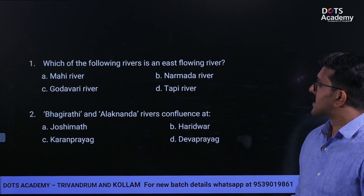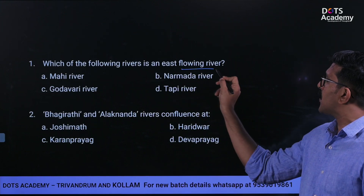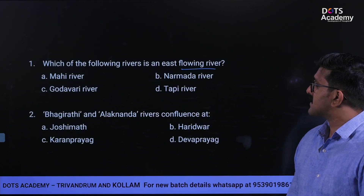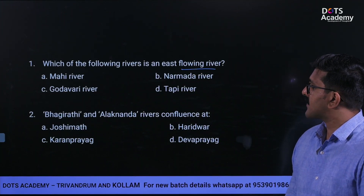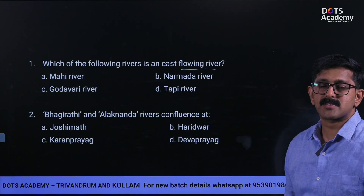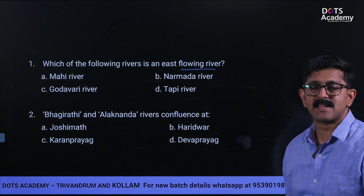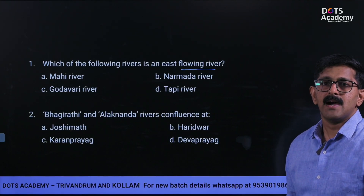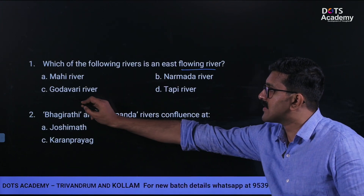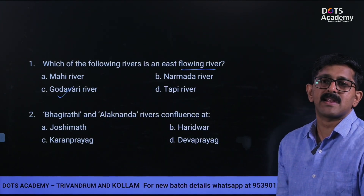Which of the following rivers is an east-flowing river? Options: Mahi river, Narmada river, Godavari river, Tapti river. An east-flowing river in India flows toward the east side, draining into the Bay of Bengal. The east-flowing river among the options is Godavari river.